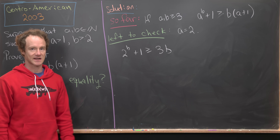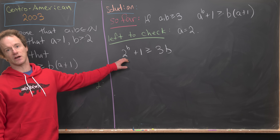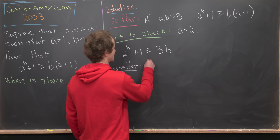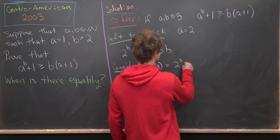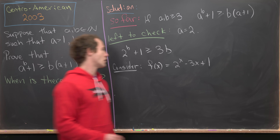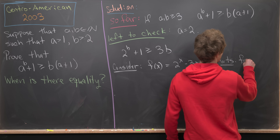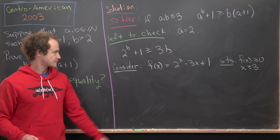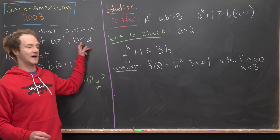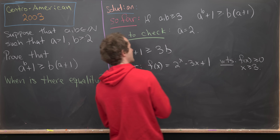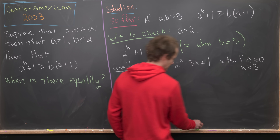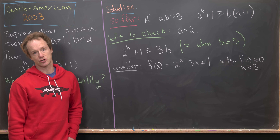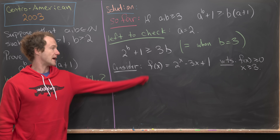We have an exponential on the left and a linear object on the right, so clearly the exponential grows faster, but we need to verify this more carefully. Consider the function f of x equal to two to the x minus three x plus one. We want to show that f of x is bigger than or equal to zero for all x bigger than or equal to three. Plugging in B equals three gives equality, so equality occurs when B equals three.